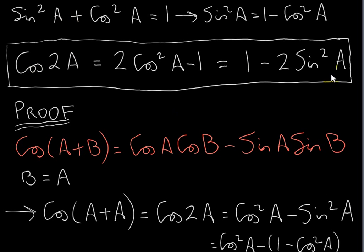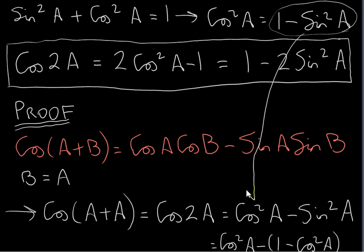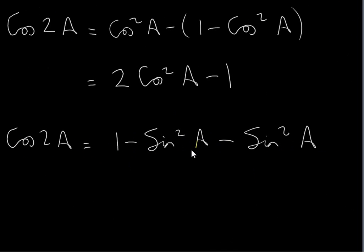And then we have the minus 1. To prove that cos(2A) = 1 − 2sin²A, we rearrange the Pythagorean identity a different way — we make cos²A the subject. So cos²A = 1 − sin²A. We plug 1 − sin²A in for cos²A, and putting these together we get 1 − 2sin²A. So this trigonometric function involves a double angle — the argument of the cos function is 2A — and we've written it in terms of a function of a single angle, sin A.